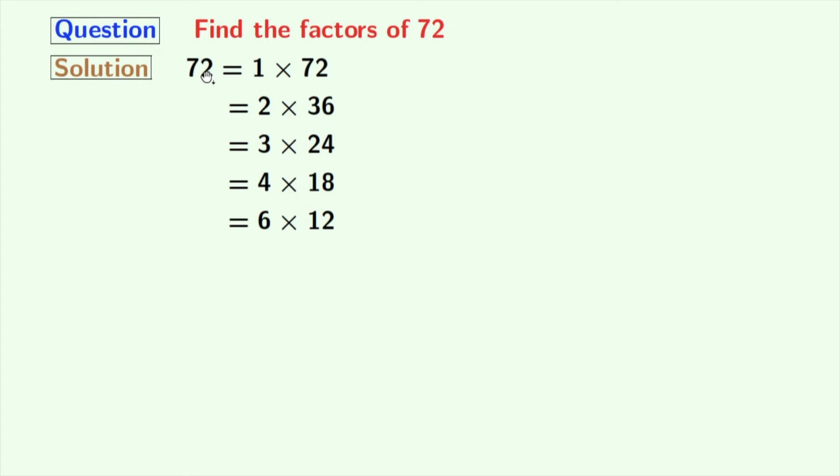The next number is 7, but it does not divide 72. Next comes 8, and we have 8 times 9 equal to 72. The next number is 9, and we have 9 already here, so we will stop right now.